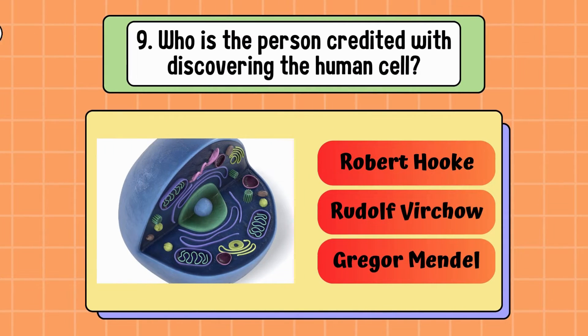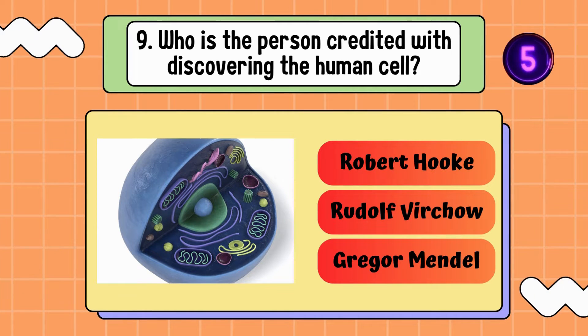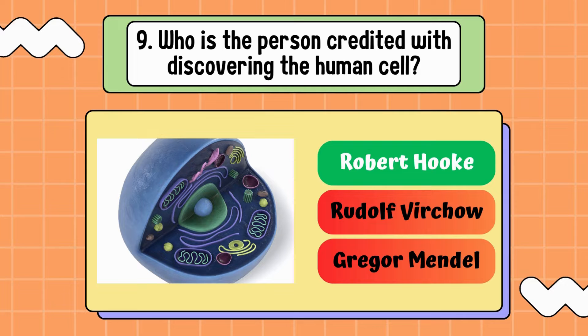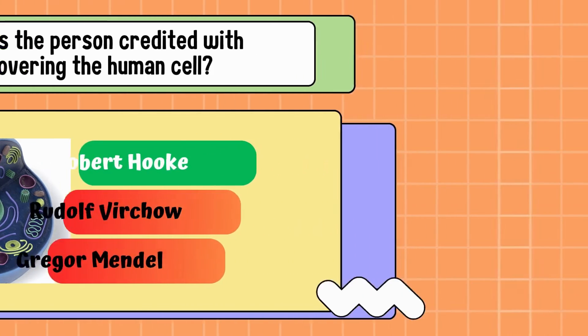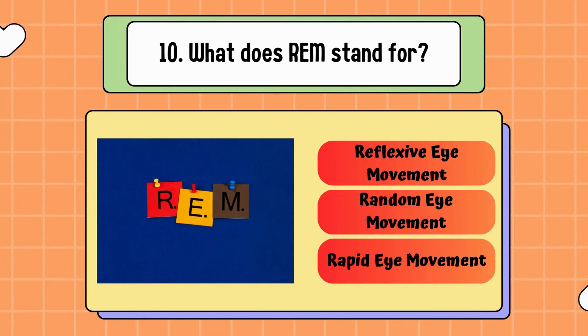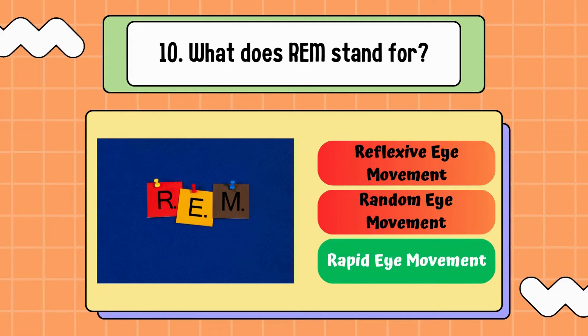Who is the person credited with discovering the human cell? Robert Hooke, Rudolf Virko, or Gregor Mendel? Correct answer is Robert Hooke. What does REM stand for? Reflexive eye movement, random eye movement, or rapid eye movement? It is rapid eye movement.